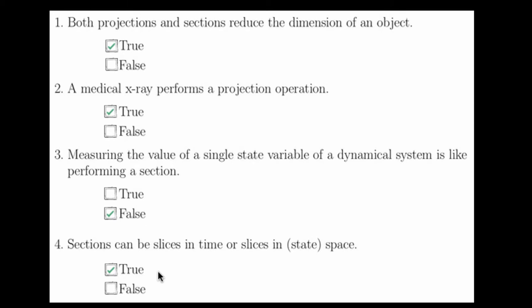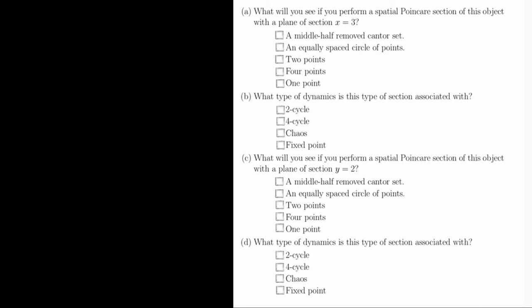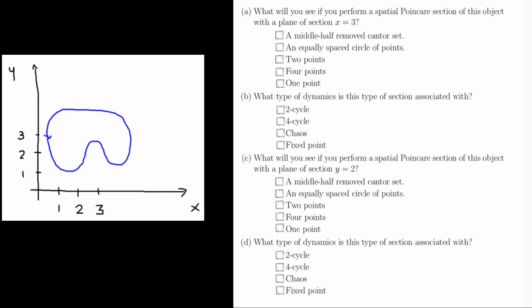Poincaré sections, or sections, can be slices in both time and space. The next four questions involve taking Poincaré sections, or spatial sections, of this orbit of a dynamical system. This is the typical method for determining the period of a trajectory from a flow.